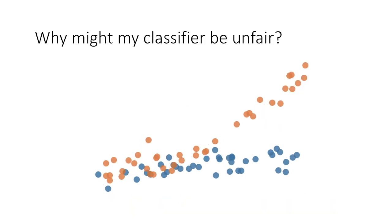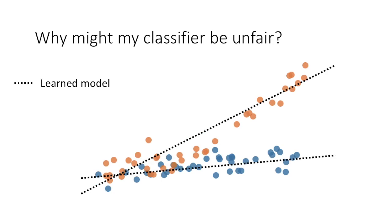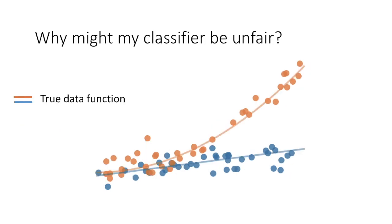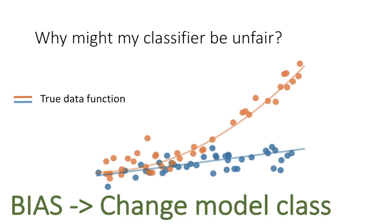In another case, we have data again from two groups. For one model or two models, we see that the error for the orange group is again higher than the error for the blue group. Because the orange-generating function is quadratic, the linear model class is ill-suited for the orange group versus the blue group. We call this error due to bias, and we would recommend changing the model class.